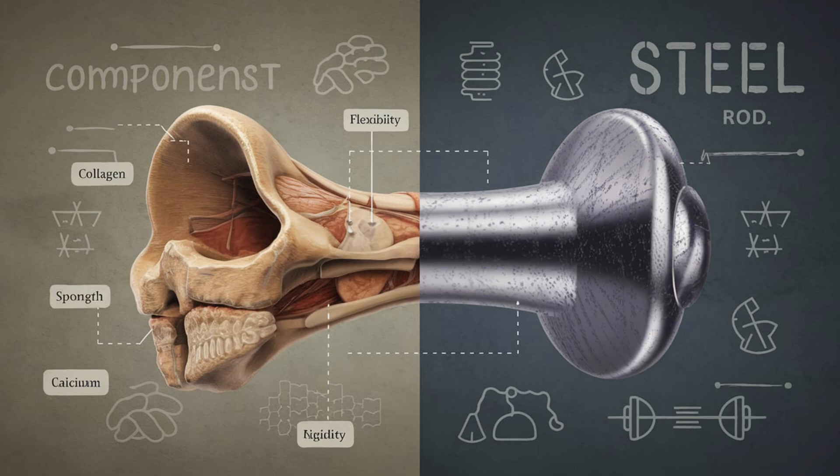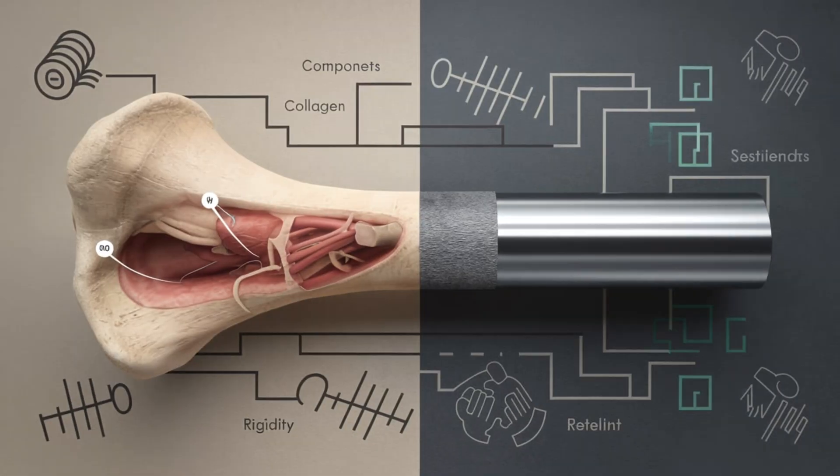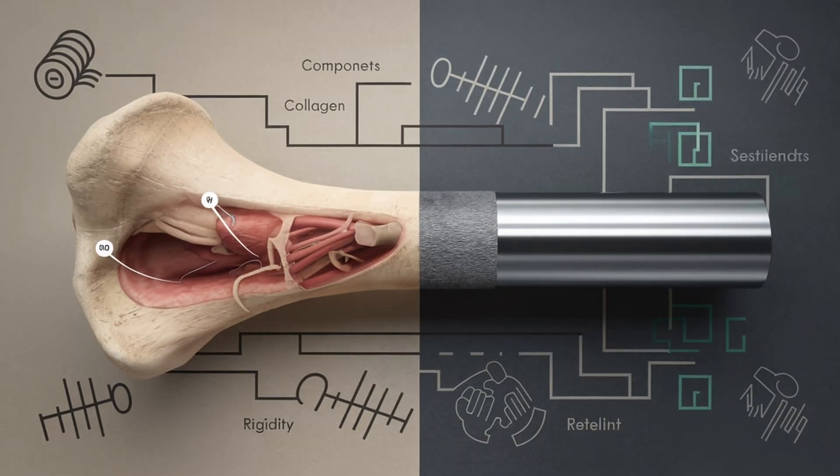At first glance, you might think bones and steel have nothing in common. But in reality, they're both built for strength and durability.